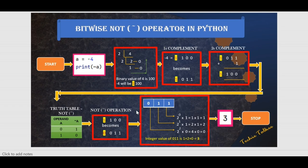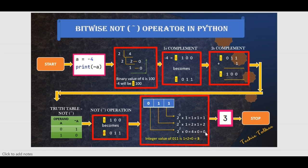Now this value should be converted to an integer. We have 0, 1, 1. This 1 is multiplied by 2 to the power 0: 1 × 1 = 1. This 1 is multiplied by 2 to the power 1: 2 × 1 = 2. And this 0 is multiplied by 2 to the power 2: 4 × 0 = 0. To get the integer value of 0, 1, 1 we add: 1 + 2 + 0 = 3. So the bitwise NOT on minus 4 is 3. Let's execute this in Python and see what result we get — we get 3.